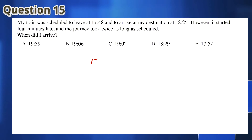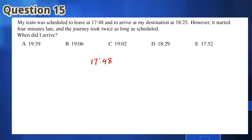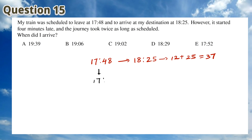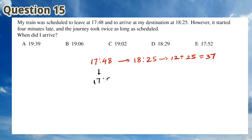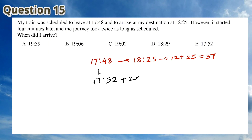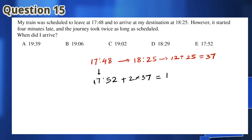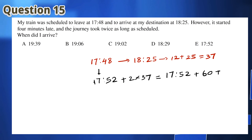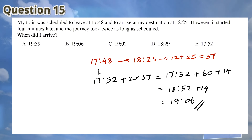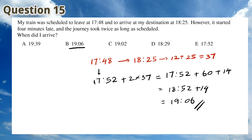For Question 15, a regular journey would have started at 17:48 and would have arrived at 18:25, taking a total of 37 minutes. However, he arrived 4 minutes late, so the train left at 17:52 and took twice as long, which is 74 minutes. This gives 17:52 plus 74 minutes, which is 19:06. This means that the answer is B.